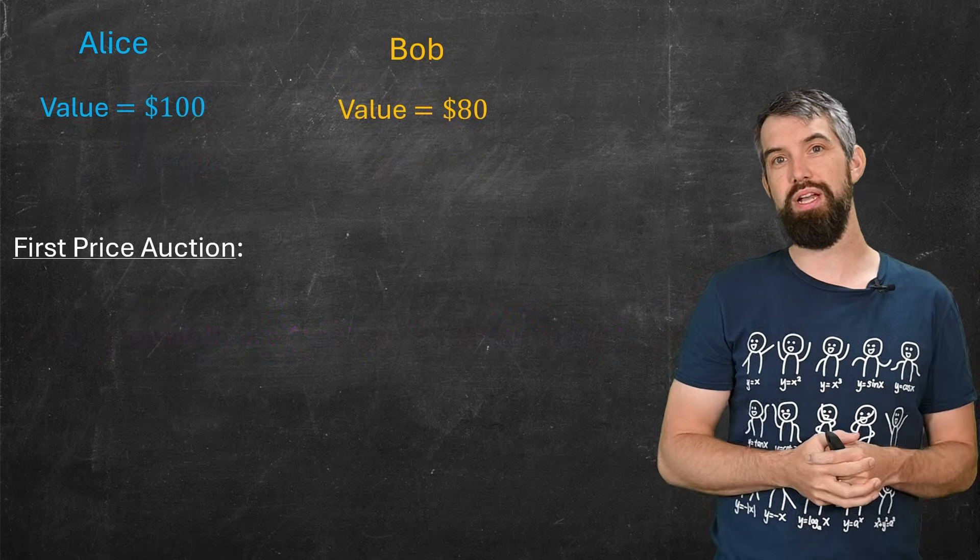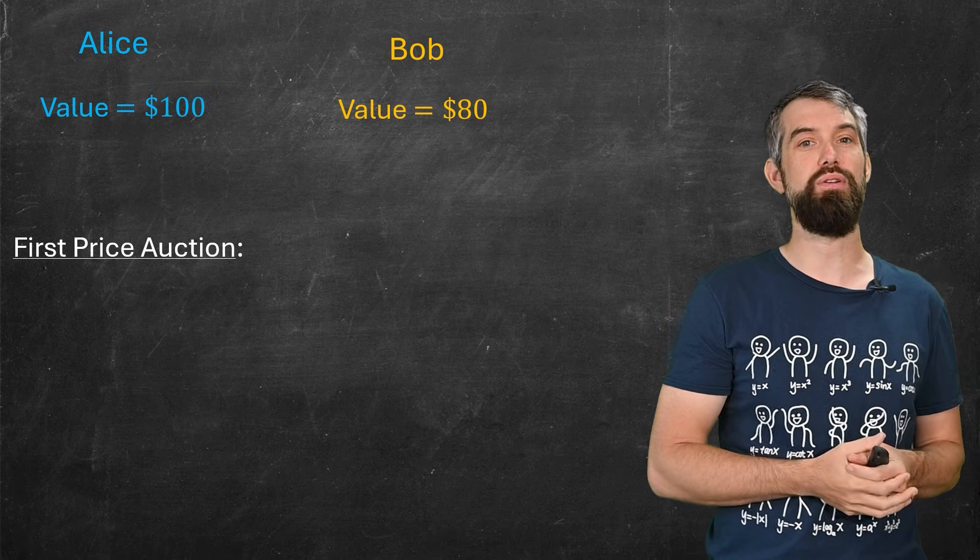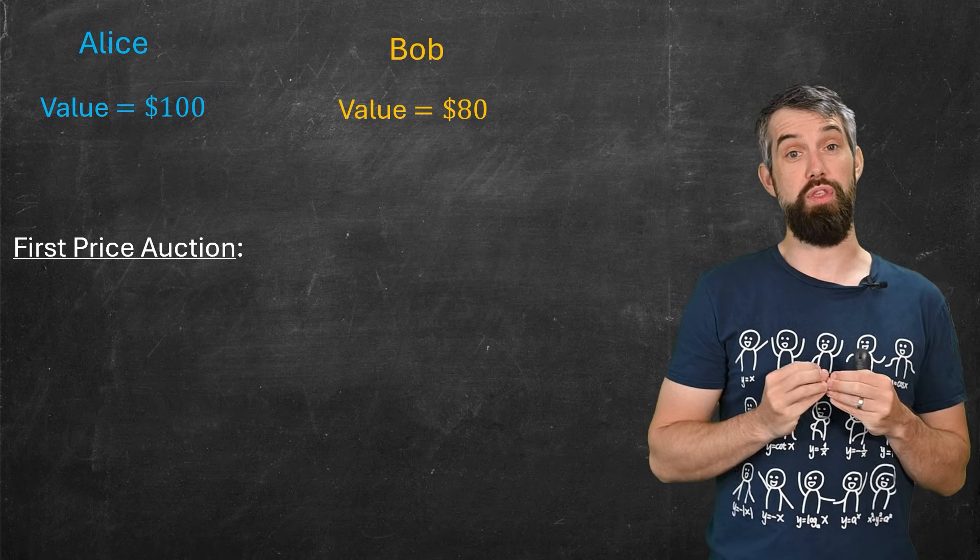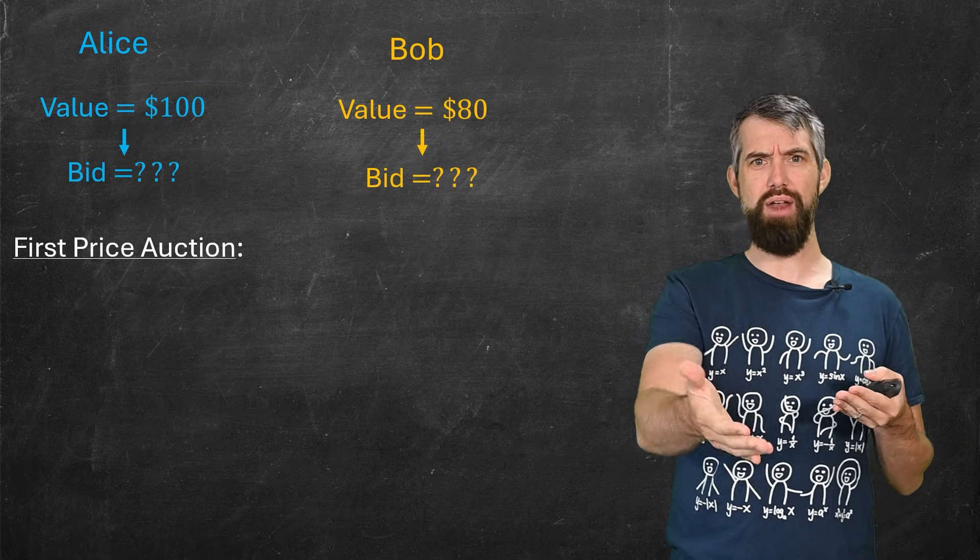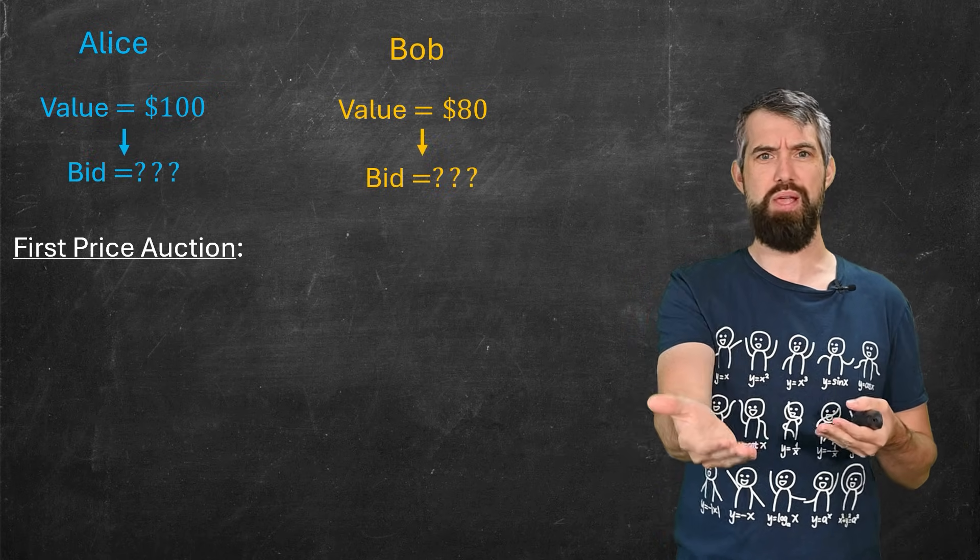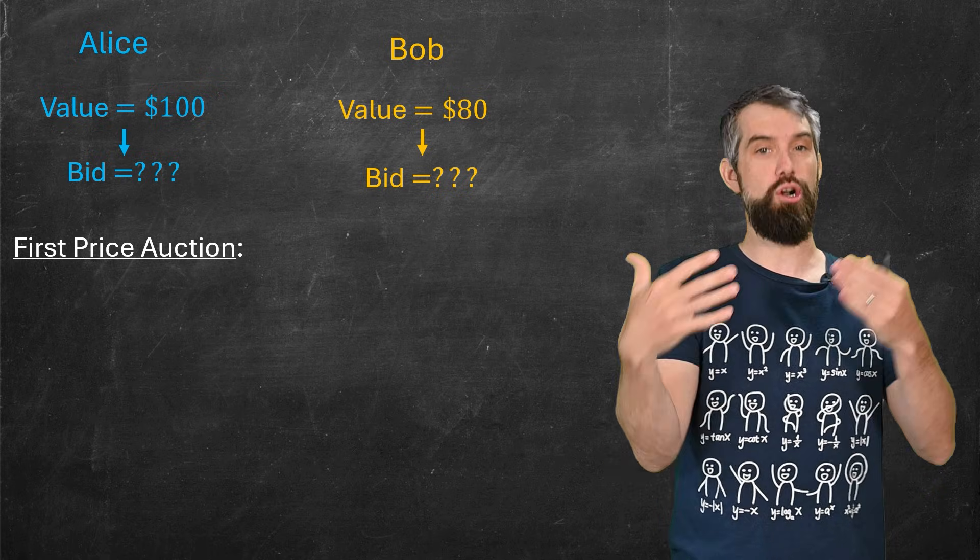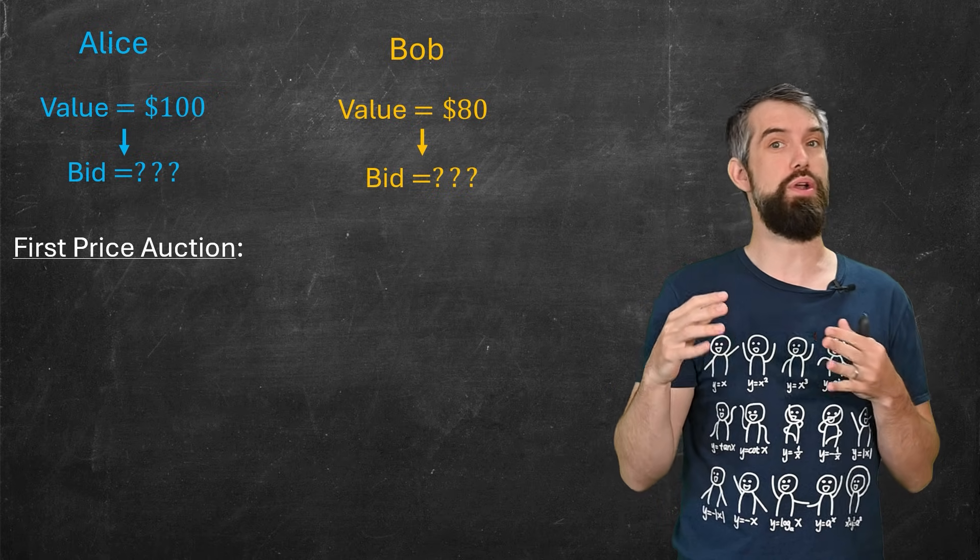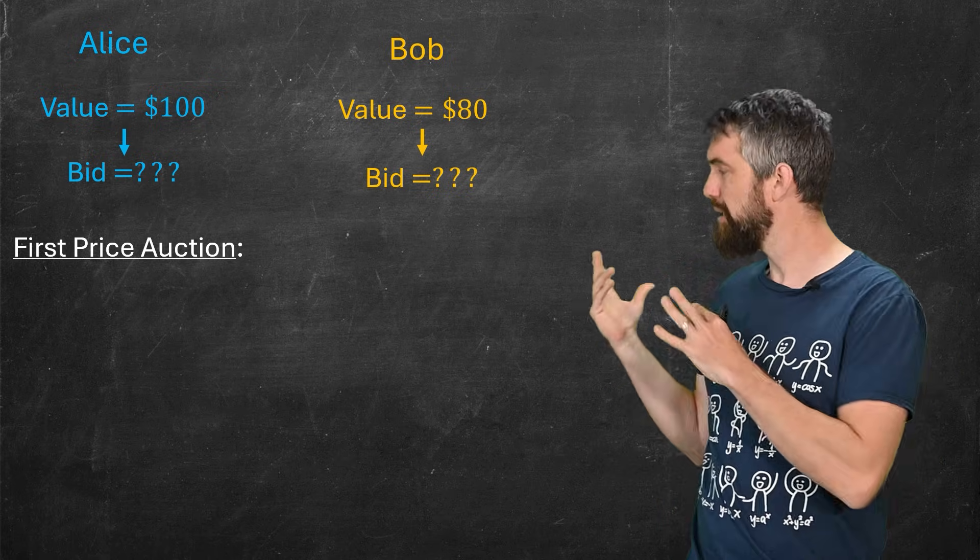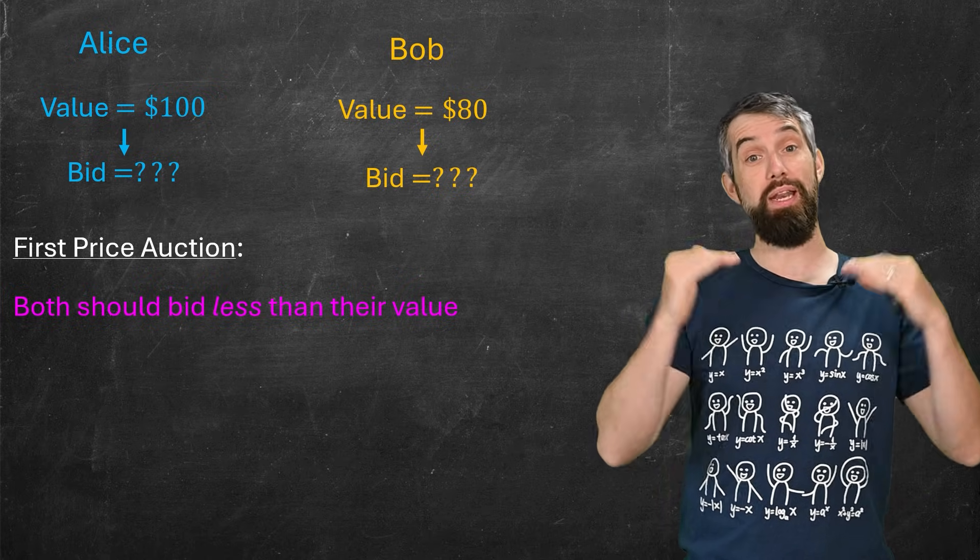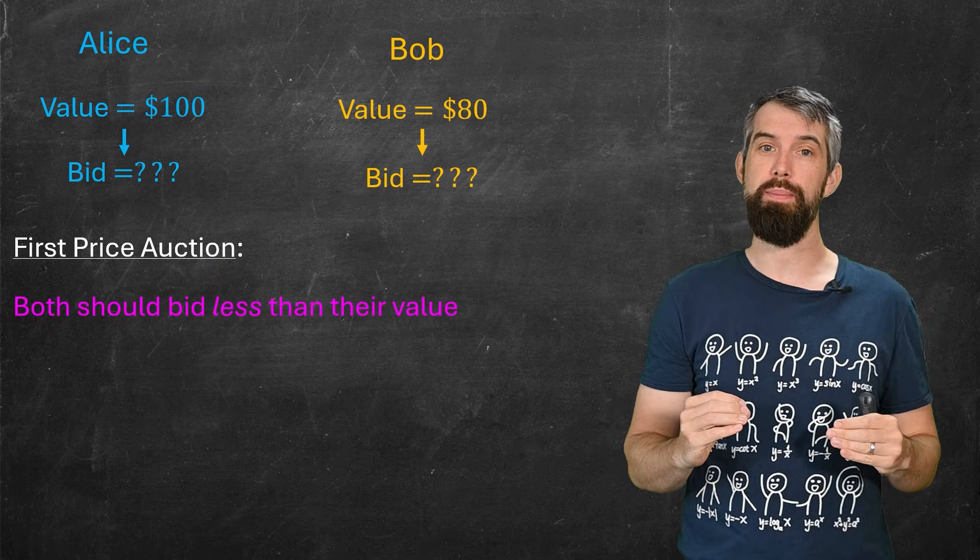This is in contrast to a first price auction. Again, if they value it at $100 and $80 respectively, what should they bid? Well, they don't want to bid the truth here. If Alice is buying something worth $100, she doesn't want to pay $100, she wants to pay less than that. So she has to shade her bid, which means to bid a little under what her true value is. And there's some formulas for these in specific cases. But the point is, you're not being truthful. You're bidding less than you truly value it.